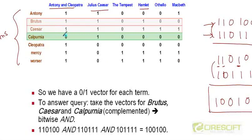They contain the words Brutus and Caesar, both of them, but they don't contain the word Calpurnia. If you look at this play and this play. Both of them contain Brutus and Caesar, but they don't contain the word Calpurnia. And no other play satisfies all the three conditions.